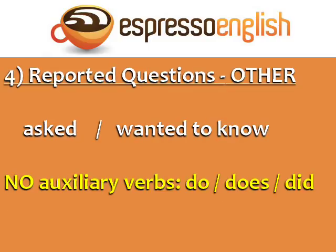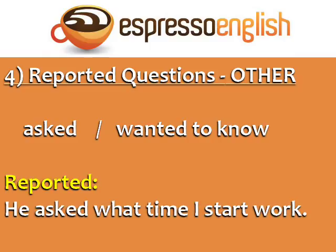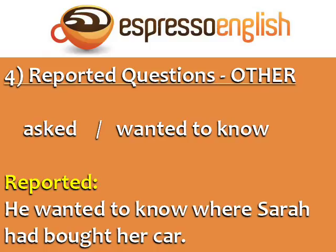To report other questions that are not yes or no questions, we use 'asked' and 'wanted to know' with no auxiliary verbs do, does, or did. For example — Direct: 'What time do you start work?' Reported: 'He asked what time I start work.' There is no auxiliary verb do. Direct: 'Where did Sarah buy her car?' Reported: 'He wanted to know where Sarah had bought her car.' Again, there is no auxiliary verb did in the reported question.